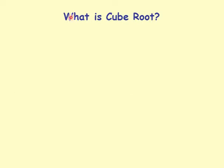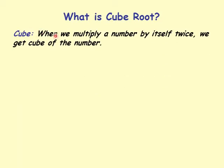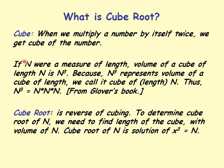What is a cube root? We'll discuss first principles first. A cube is when we multiply a number by itself twice — we get the cube of that number. If n is a measure of length, the volume of a cube of length n is n cubed, because n cubed represents the volume of a cube of side length n. We call it a cube of length n. Thus, n cubed is n times n times n — we multiply n by itself twice more.